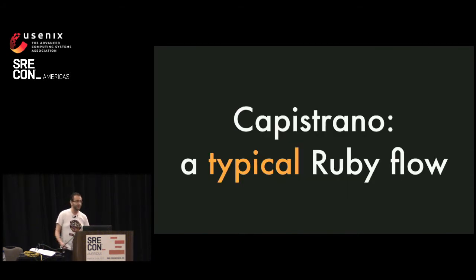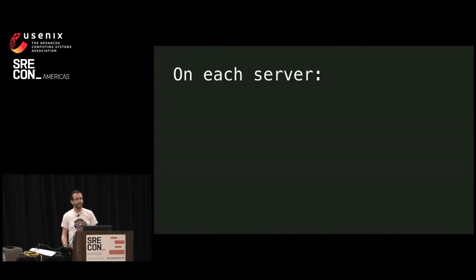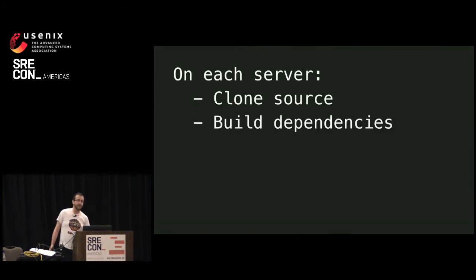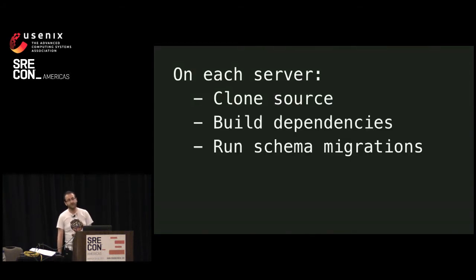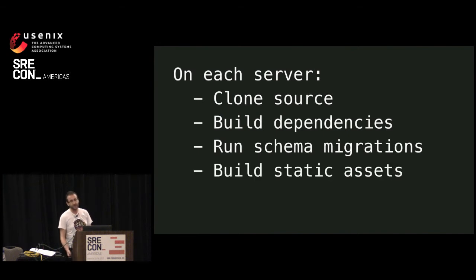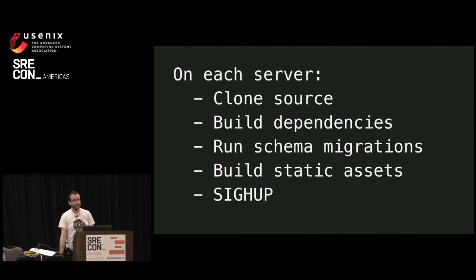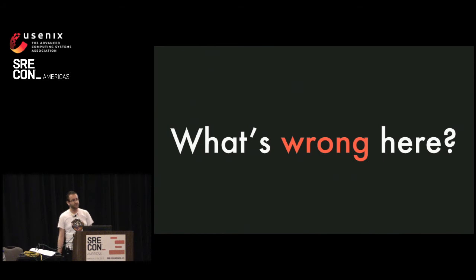So let's look at a typical Ruby deployment flow using a tool called Capistrano. The default flow that Capistrano ships with looks like this: on each server, you clone the source code, you build your dependencies, you run schema migrations against the database from one server, you build static assets — CSS, HTML, whatever you need — then you send SIGHUP to your web server and it reloads the new code in.